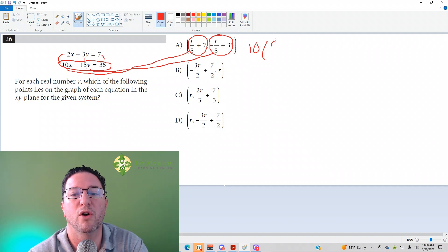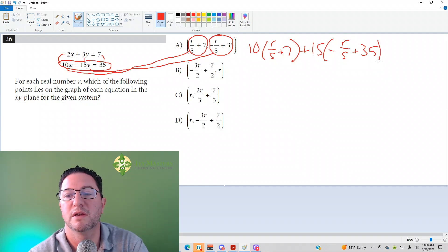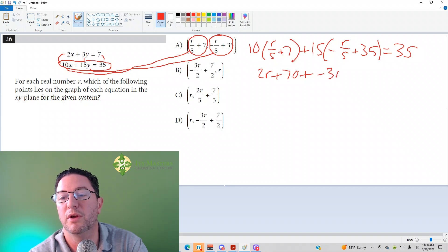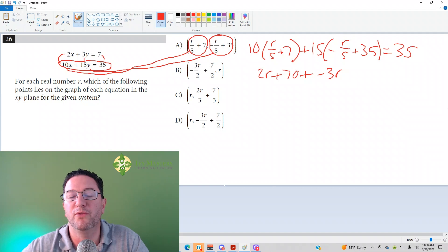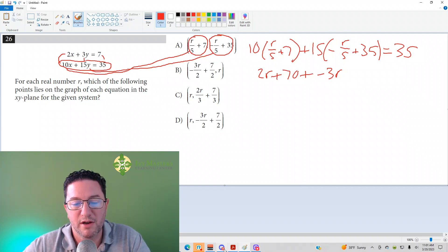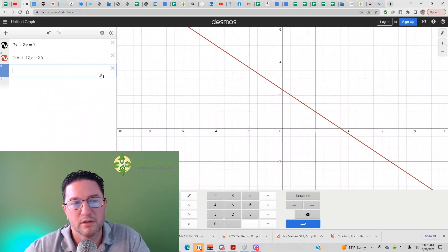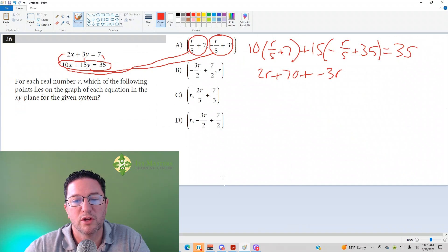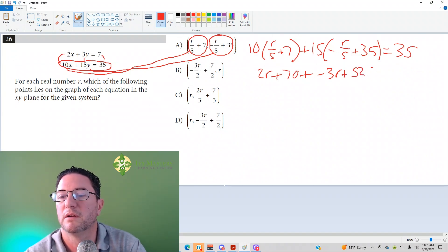So 10 and then in parentheses in place of the X is R over 5 plus 7. I can close that parenthesis. Plus 15 in parentheses negative R over 5 plus 35. Close the parentheses. Equals 35. Let's see what happens. When I multiply the 10 by R over 5, I get 10R over 5 or just 2R plus 70. Plus, when I multiply the 15 by negative R over 5, I'm going to get negative 15R over 5, which is going to be negative 3R. And then when I multiply the 15 by the 35, it's probably a little easier to use Desmos there. So I'm going to pull it up. We have 15 times 35.